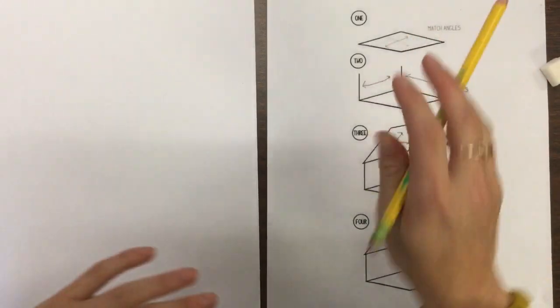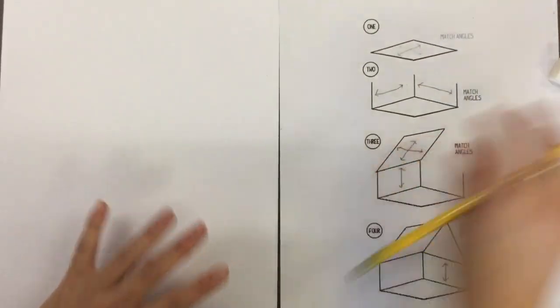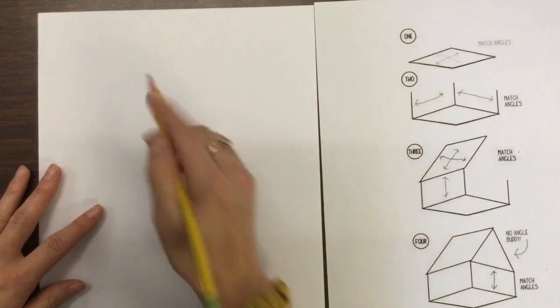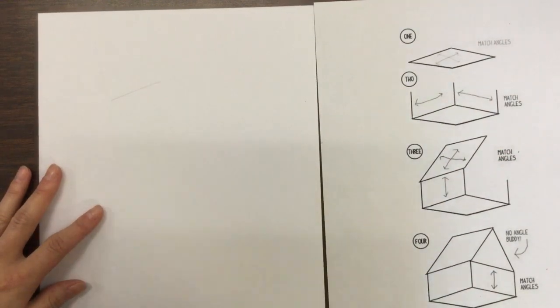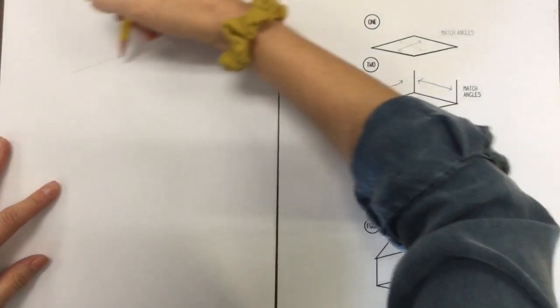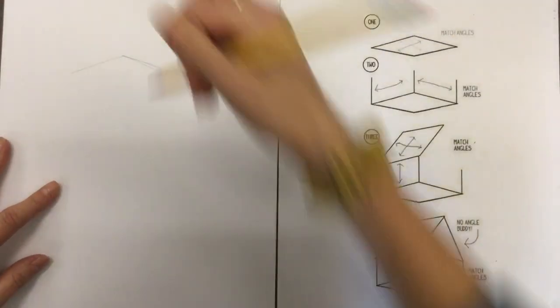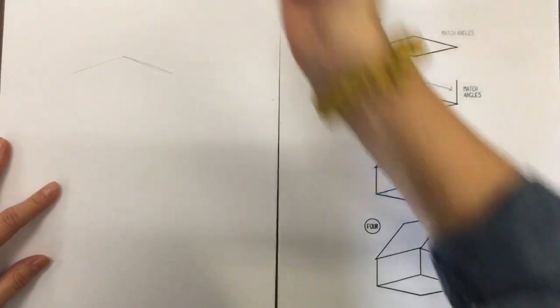So to start our step one is we have to draw that parallelogram and we have to make sure that we match our angles. So I'm going to draw an angle up and then I'm going to match that same angle on the other side as best as I can. Go slow and take your time.